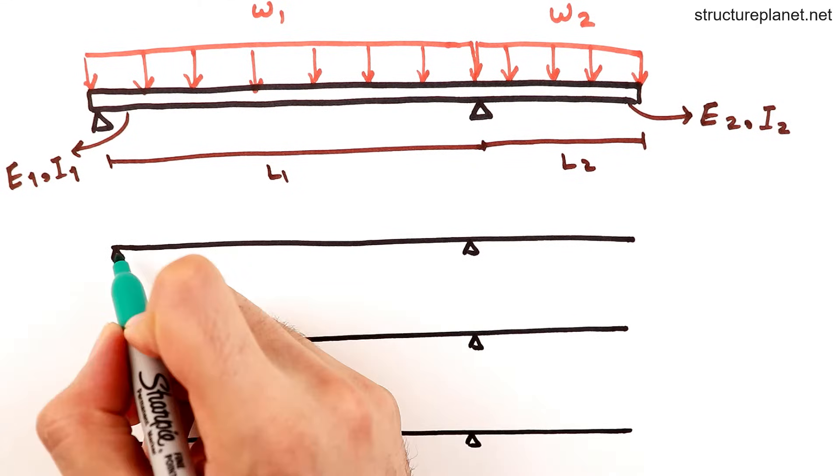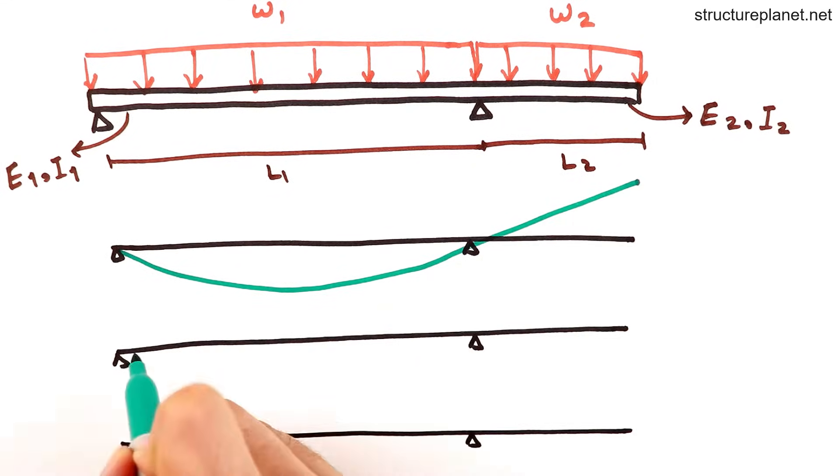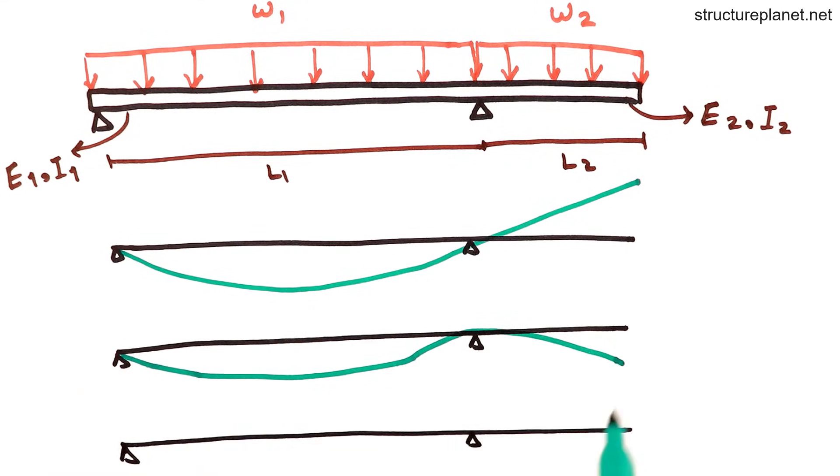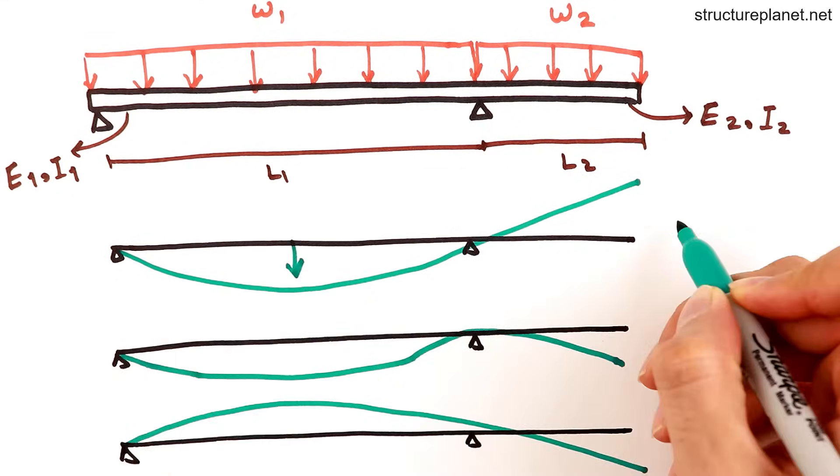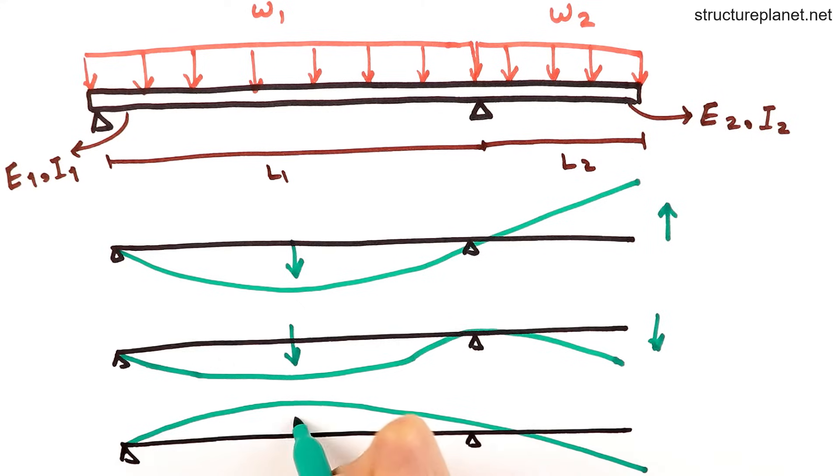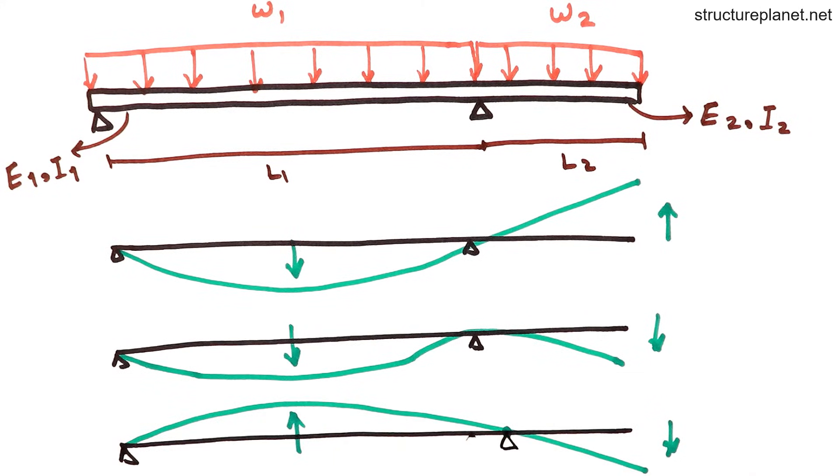Depending on the various load and stiffness configurations and length of members, the cantilever end may even move upward instead of downward. However, in any case, cantilever deflections must be within code limits to avoid damaging of the finishes or cladding.